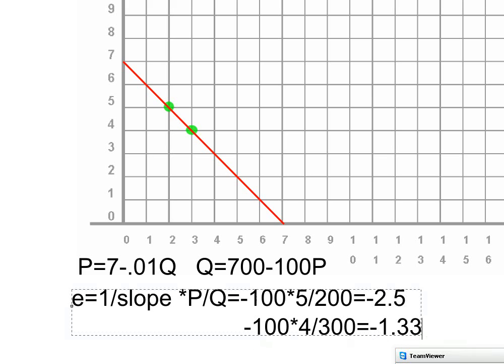Okay, so if you calculate those two elasticities, you get minus 2.5 up here. Let me type that up here so we can see where it is on the graph. And for this other green point that's a little further down, we're going to get an elasticity of minus 1.33.